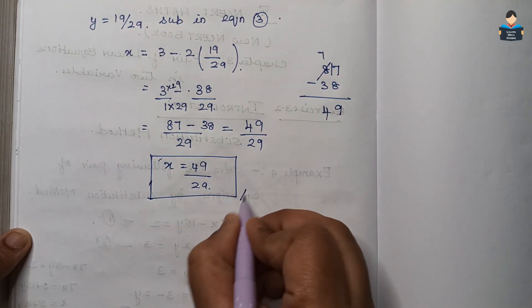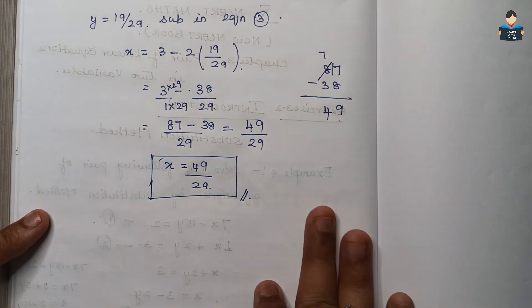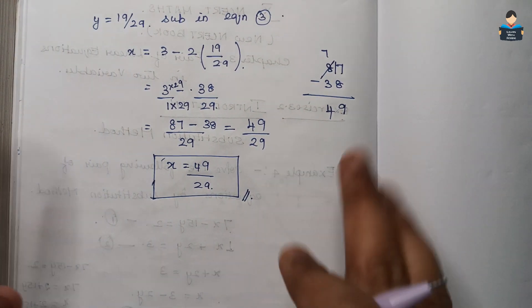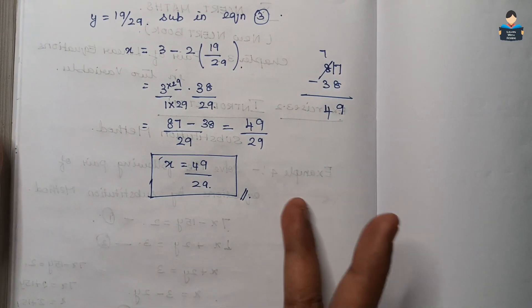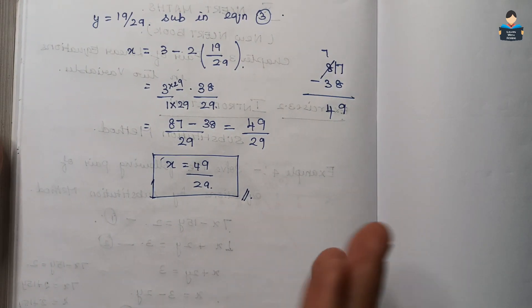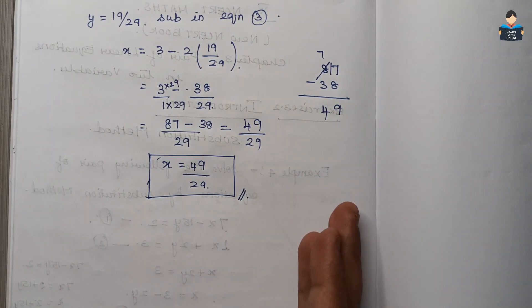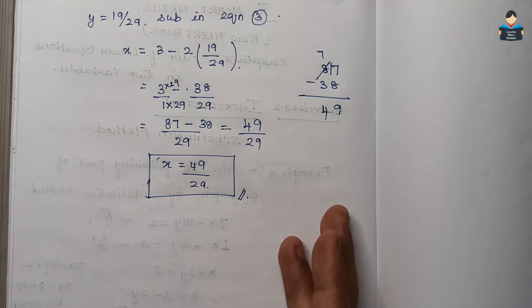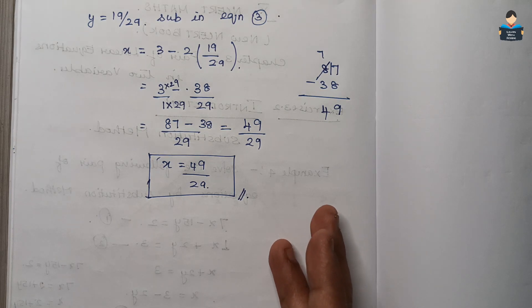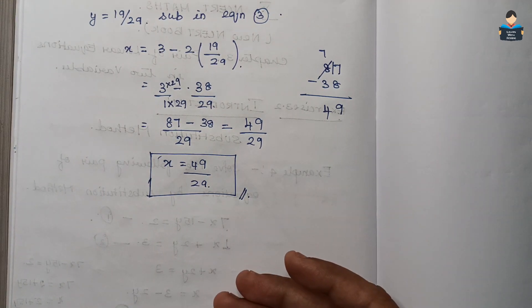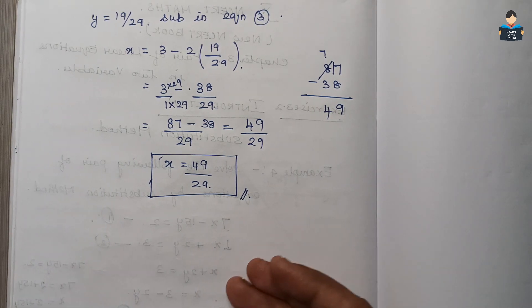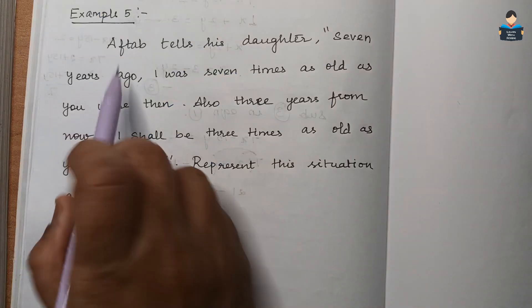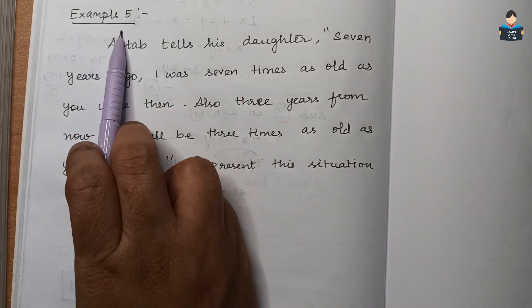So the final answer is x equals 49/29 and y equals 19/29. That is how we solve using the substitution method. Now we will see Example 5.